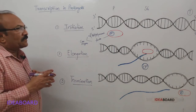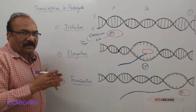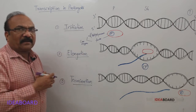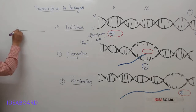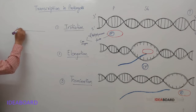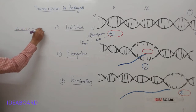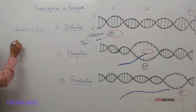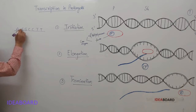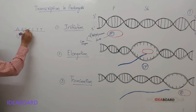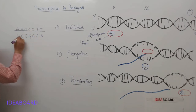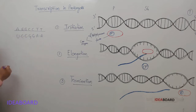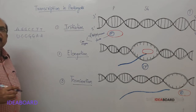Once it starts, these nucleotides are arranged according to complementarity. Suppose on the template strand there are nucleotides like A, G, G, C, C, T, T — then the RNA polymerase will bring U opposite to A, C opposite to G, G opposite to C, and A opposite to T. They are all attached with the help of phosphodiester bonds. This is different from the DNA strand, and that is why it is called heterocatalysis.